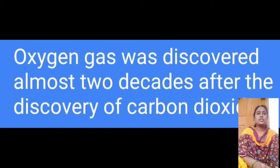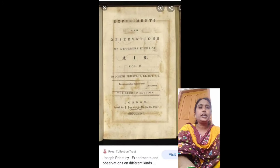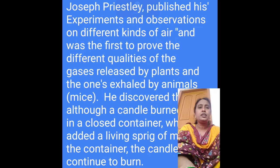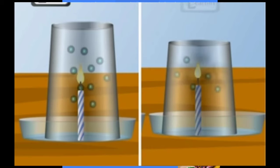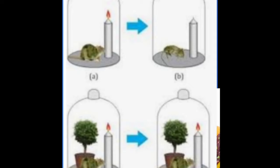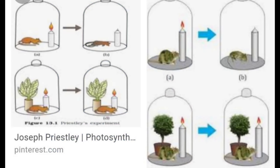Oxygen gas was discovered almost two decades after the discovery of carbon dioxide. Joseph Priestley published his experiments and observations on different kinds of air, and he was the first to prove the different qualities of the gases released by plants and the ones exhaled by animals. He discovered that although a candle burned out in a closed container, when he added a living sprig of mint to the container, the candle would continue to burn.